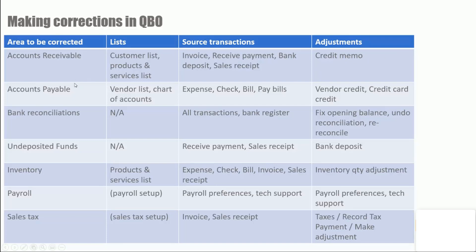Next is accounts payable. The lists are the vendor list and the chart of accounts. The source transactions are expense, check, bill, and pay bills. And the adjustments we might make are a vendor credit or a credit card credit.